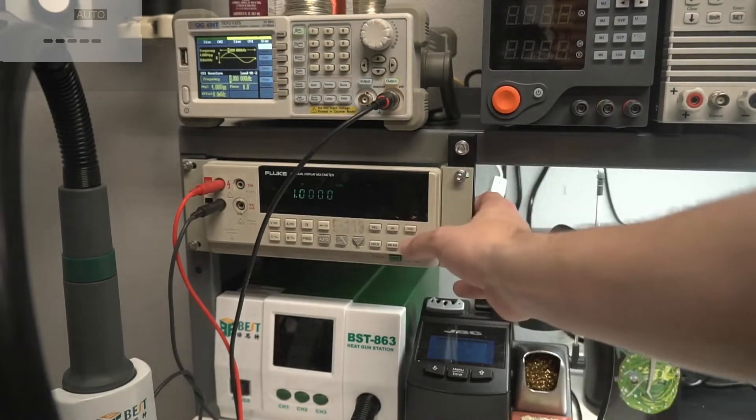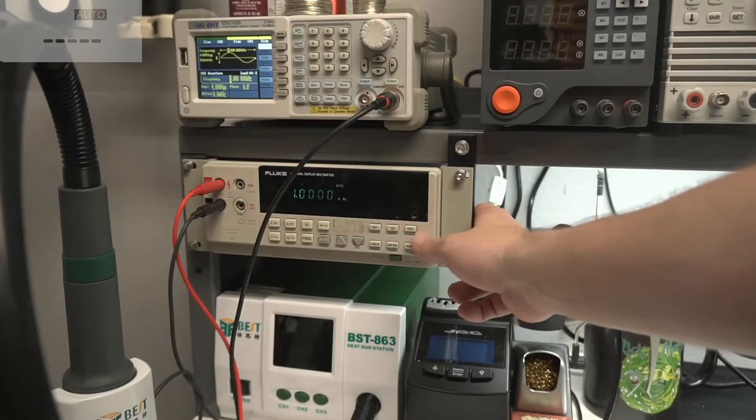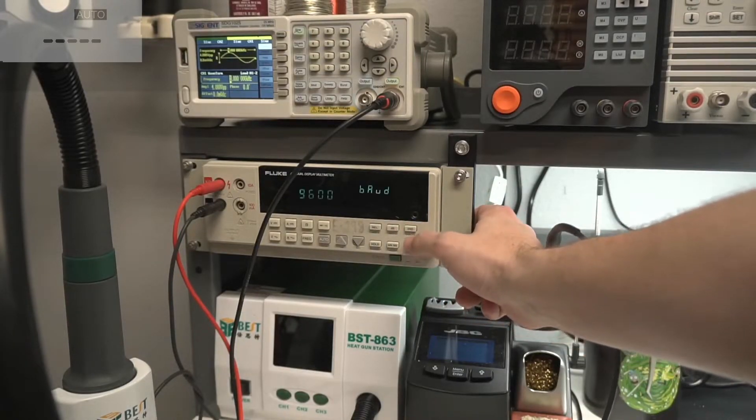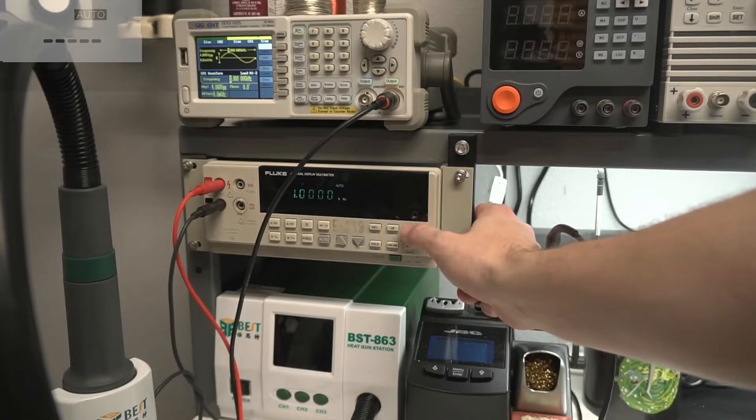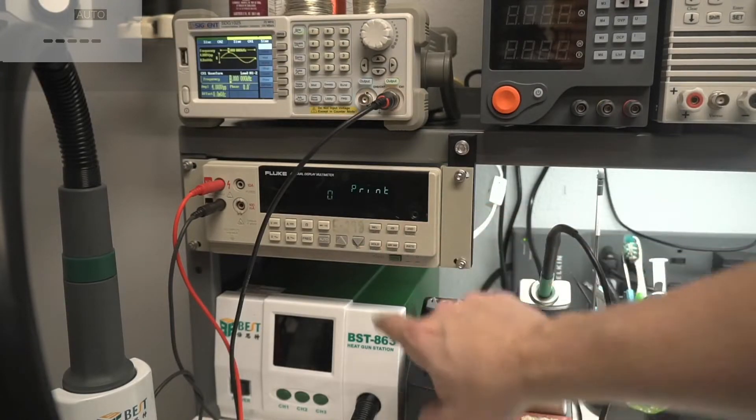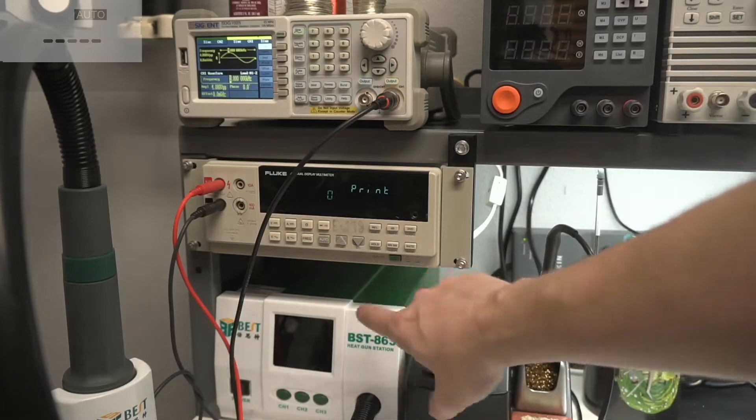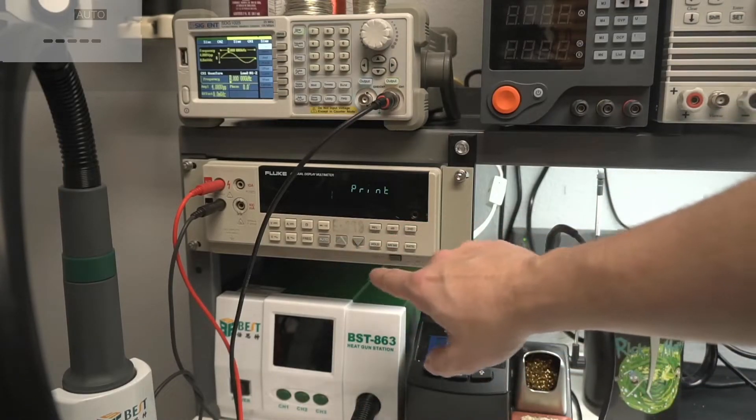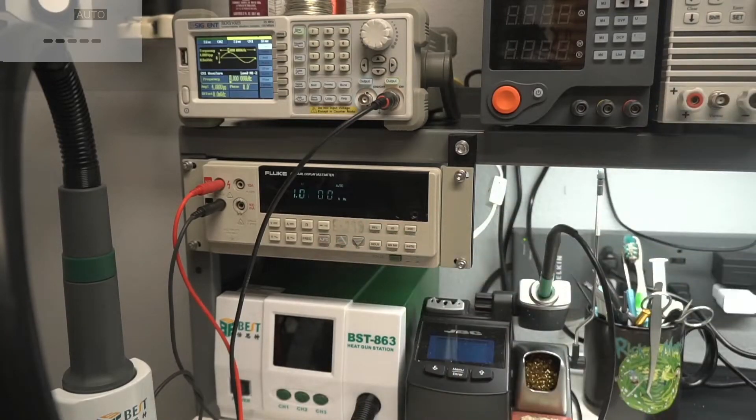So once you do that, once you have it hooked up to the computer, you need to go to second, you need to first set your baud rate to whatever you want it to be. And then you need to set the print rate, which is like the speed that it prints out. So let's just go ahead and set that to two and set it and we should start to get a reading here.